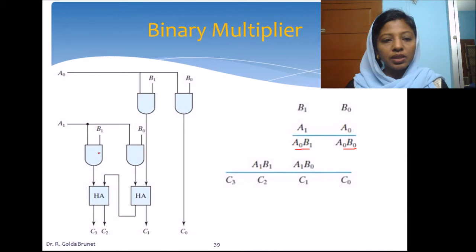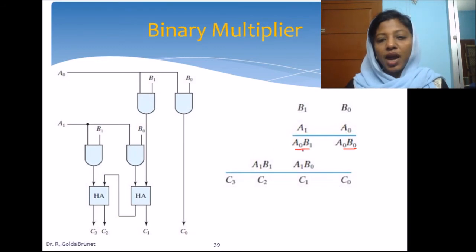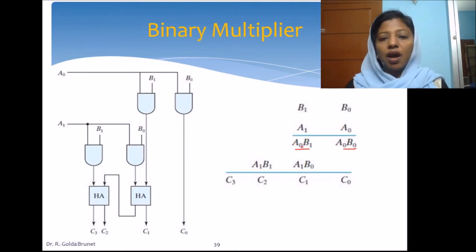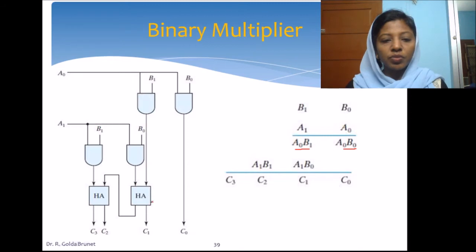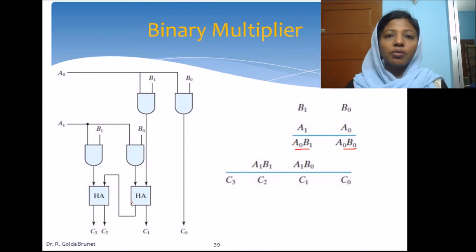A1 B1 is generated by one AND gate and A1 B0 is generated by another AND gate, and we need to add this bit with this one. Since there are only two bits we can use a half adder to add these two bits. So we have a half adder which accepts A0 B1 from one AND gate and A1 B0 from another AND gate, and these two bits are added using the half adder giving two outputs: the sum and the carry.